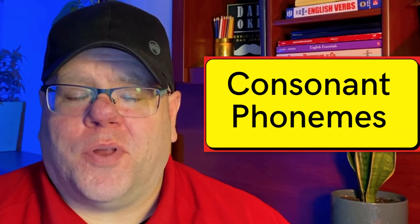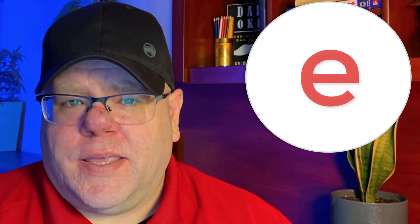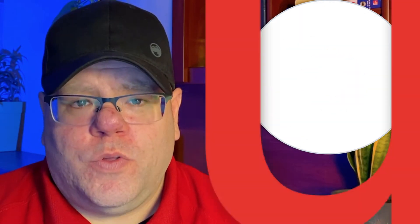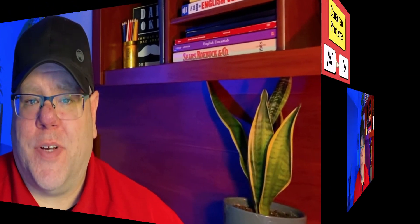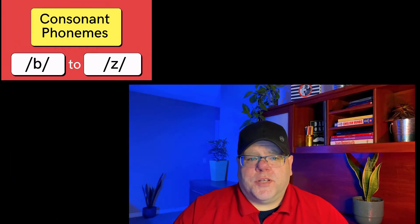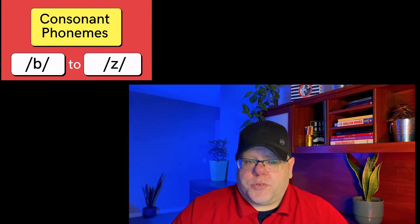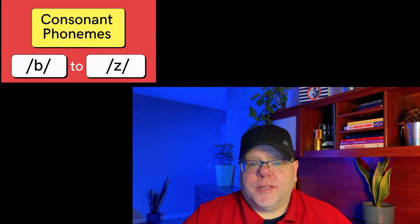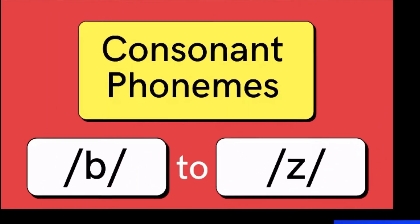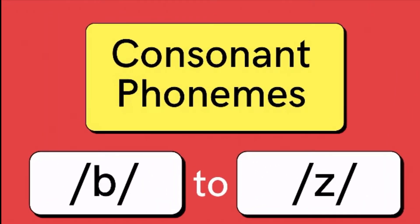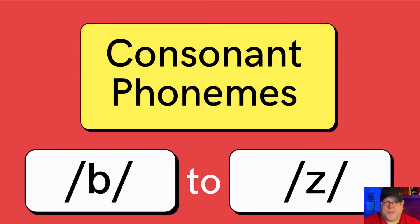Let's dive in with consonant phonemes. Remember, the vowels are A, E, I, O, U, and sometimes Y. Vowels require us to open our mouths and let the air pass freely. Consonants are all the other letters, which require us to block the air either a little bit or completely. Let's listen to the consonant phonemes and look at their spelling patterns with some example words.